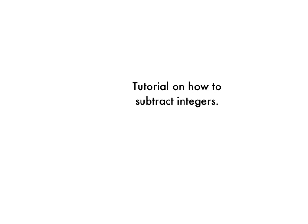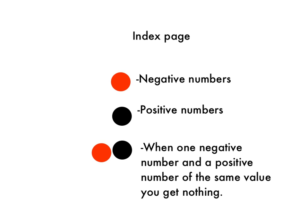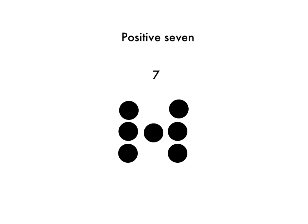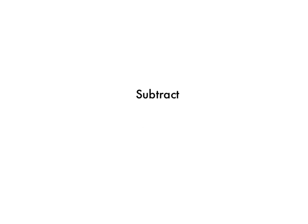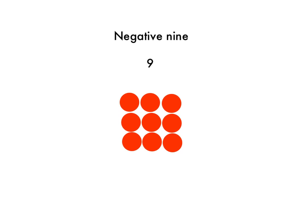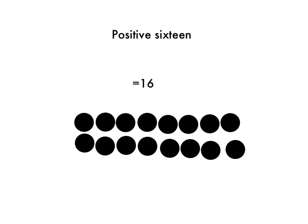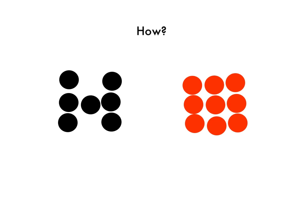Tutorial on how to subtract integers. Red chips are the negative numbers, black chips are the positive numbers. When a red chip and a black chip are combined, you get nothing. Positive 7 subtract negative 9 equals positive 16.